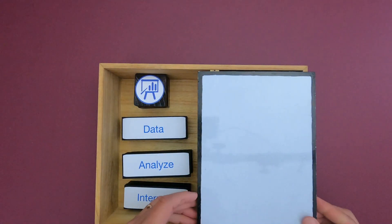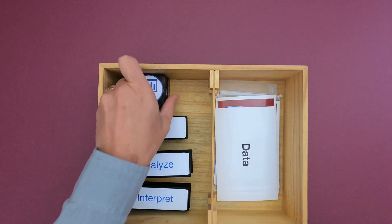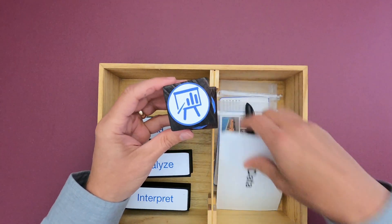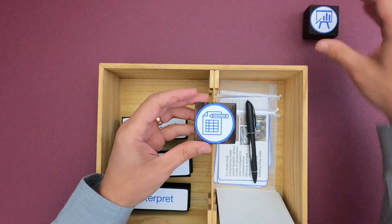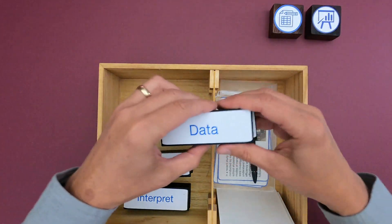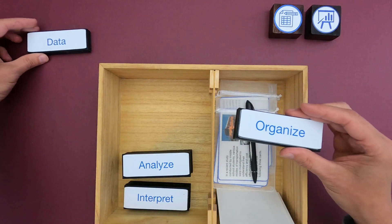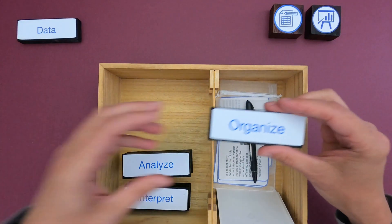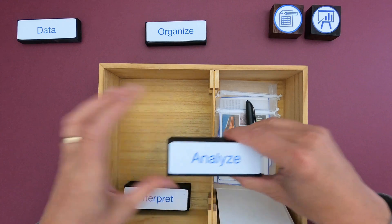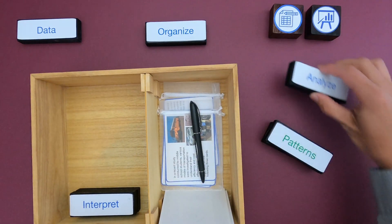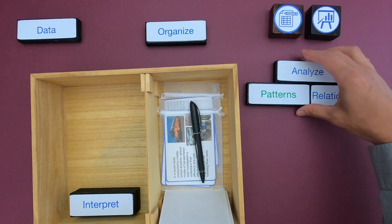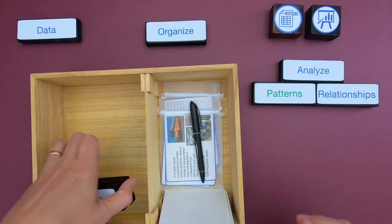We've got a whiteboard, which means we're going to draw some relationships. When you're looking at data analysis and interpretation, you really almost need a pen because we're going to be looking at a lot of data sets. You want to mark on it and figure out exactly what's going on in the data that was collected. The first thing you want to do with your pen is to circle the data — what are we actually investigating? We then want to organize the data, bring it all together. Once we've done that, we want to do some analysis: first look for patterns in the data, then look for relationships within those patterns.